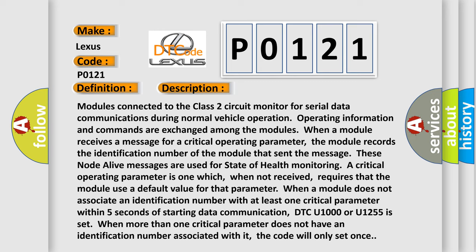These node alive messages are used for state of health. Monitoring a critical operating parameter is one which, when not received, requires that the module use a default value for that parameter. When a module does not associate an identification number with at least one critical parameter within five seconds of starting data communication, DTC U1000 or U1255 is set.